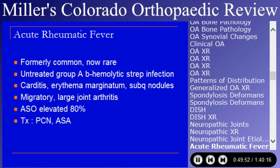Acute rheumatic fever has been asked on in-training exams. It used to be very common — cardiac surgeons used to do four, five, or six valves a week, mostly from people who had rheumatic fever. It is due to an untreated strep infection. Carditis was the worst manifestation. It presented with a skin rash, subcutaneous nodules, and a migratory large joint arthritis.